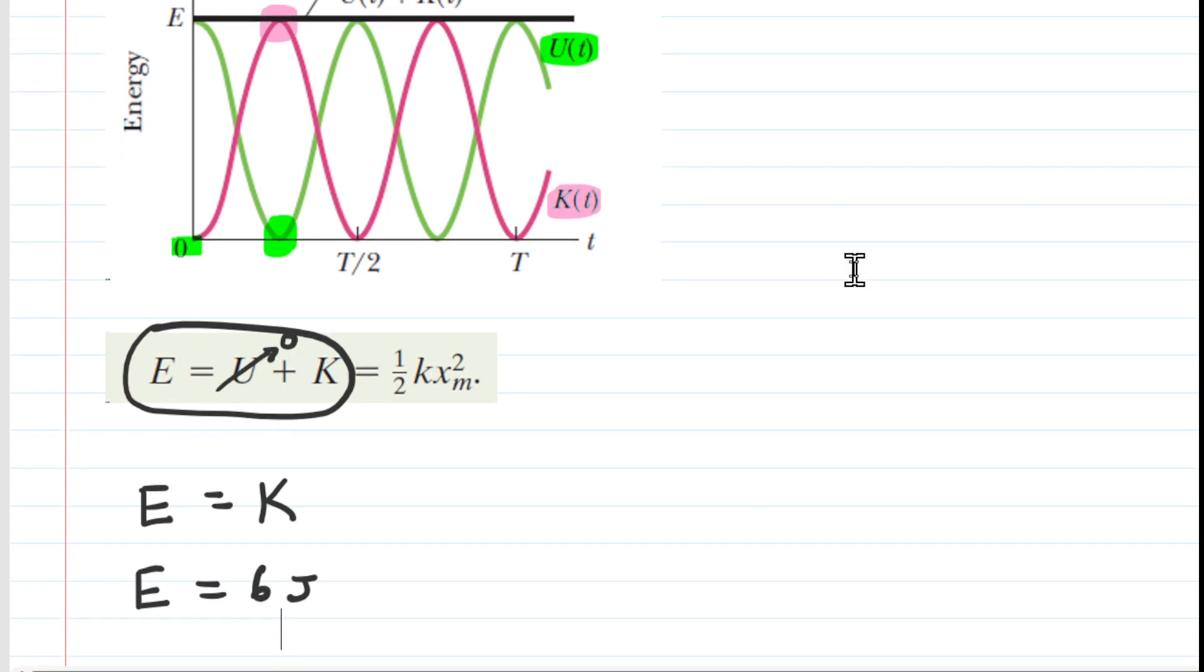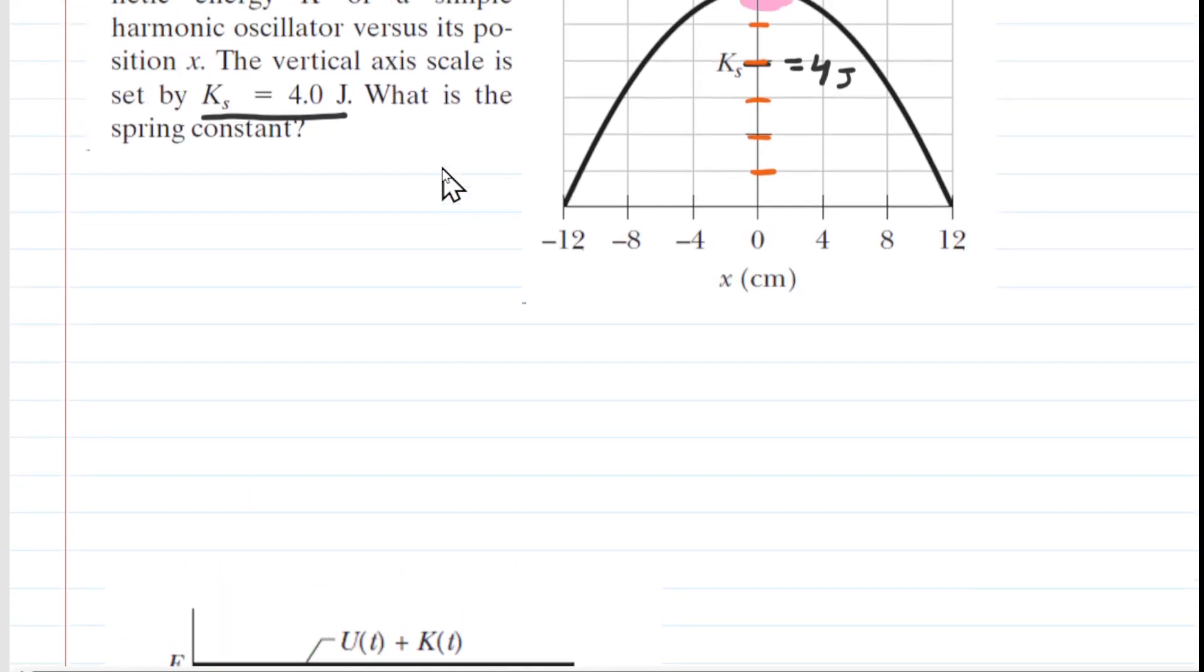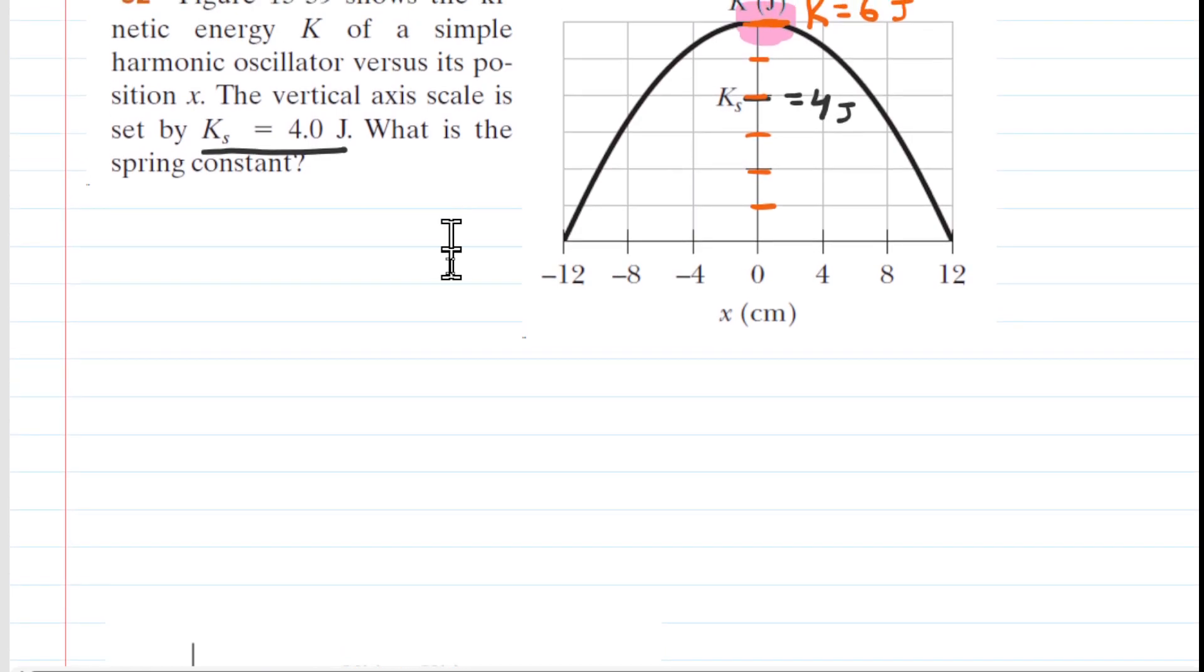Now, that was not what the problem was asking for, but it's going to be useful to know the total mechanical energy as we try to answer the question. Let's go back and just revisit the question so we remember what we're looking for. It asks, what is the spring constant? So the spring constant is represented as k.